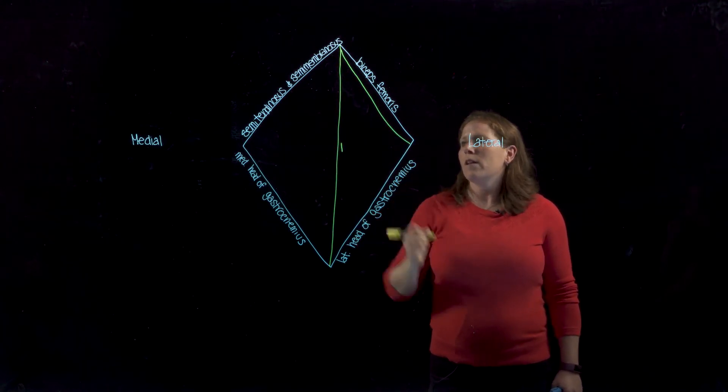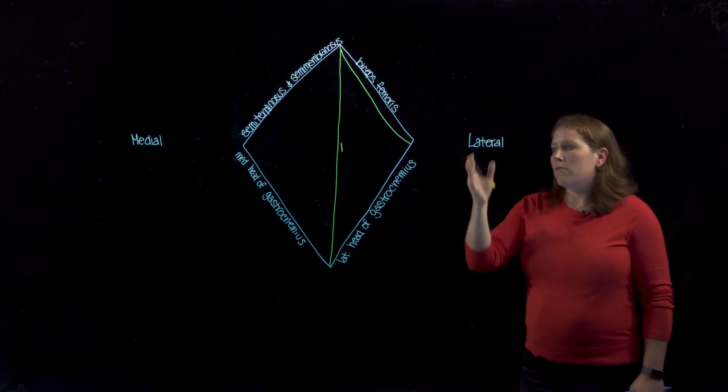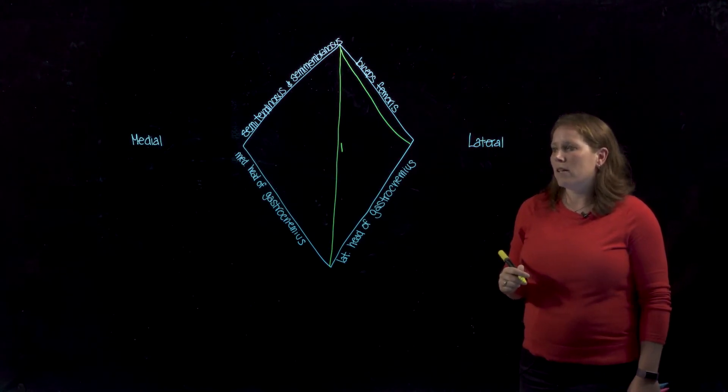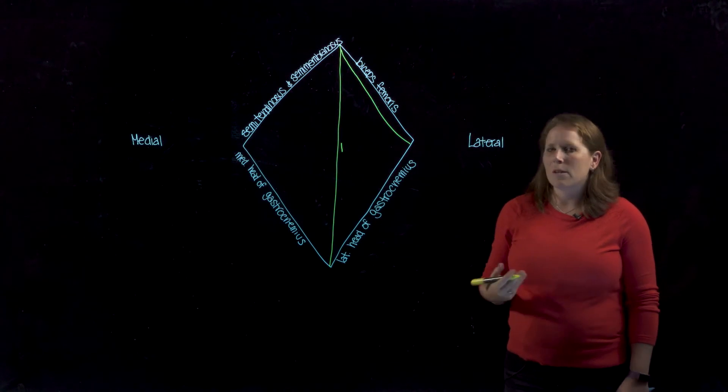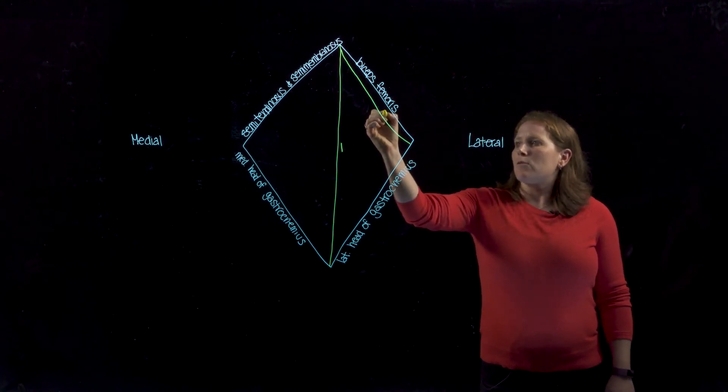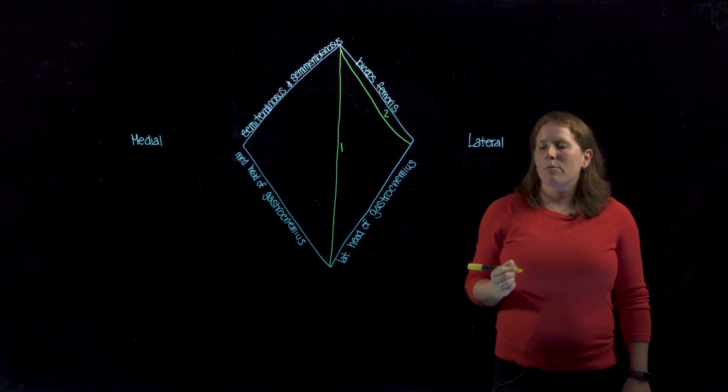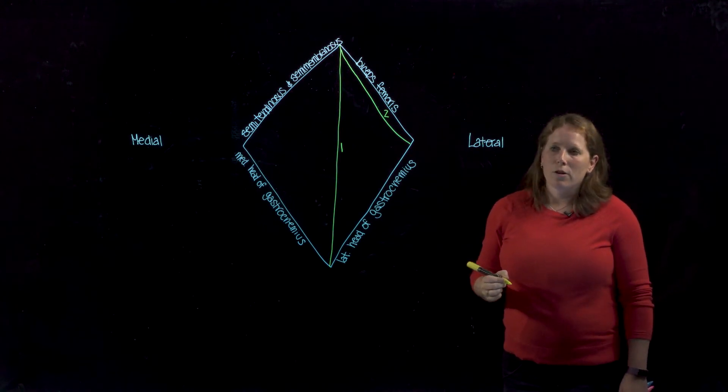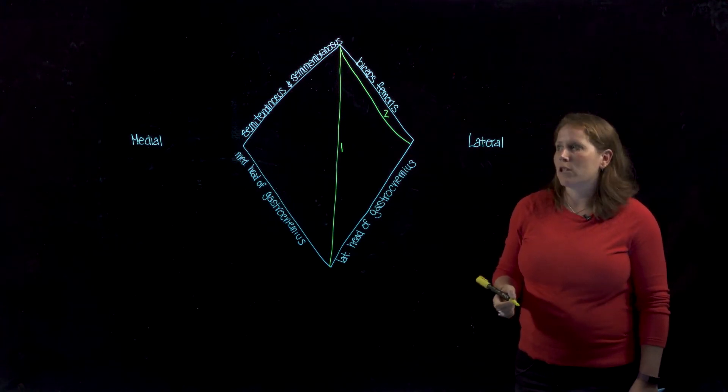So we'll label number one. The nerve that's traveling down in the center of the popliteal fossa is the tibial nerve, or the tibial branch of sciatic nerve. And this one that's running along the border of biceps femoris will be the common fibular nerve, or the common fibular branch of the sciatic nerve.